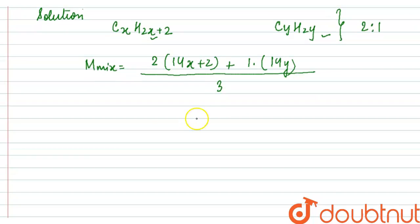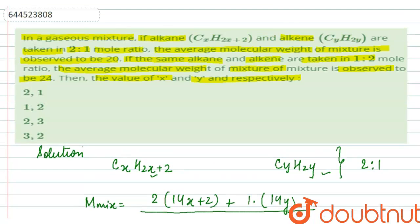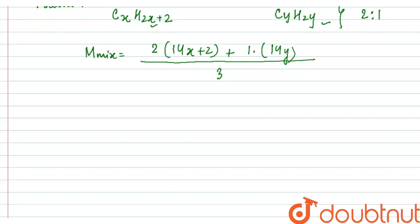This is how we find out the average. Now this value is given to us in the question and this is equal to 20. So let us solve this up. This will be equal to 28x + 4 plus 14y, and this is equal upon 3 and this is equal to 20.